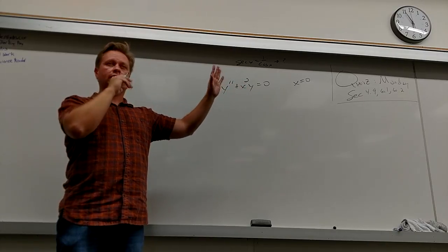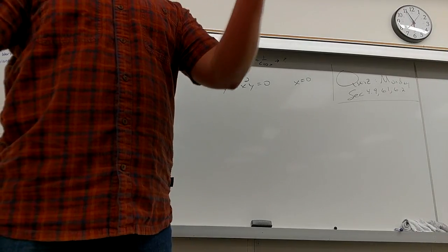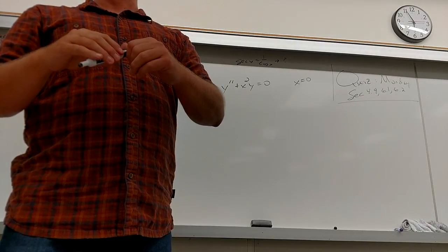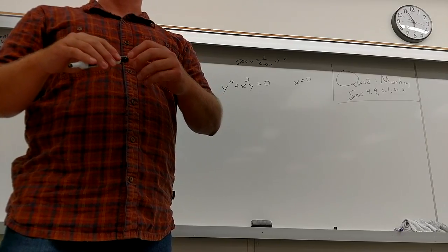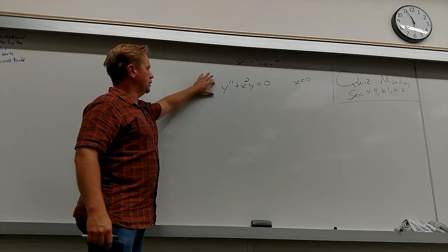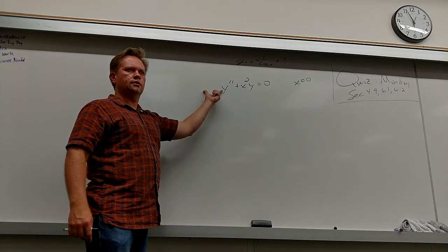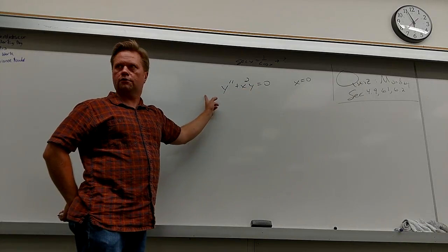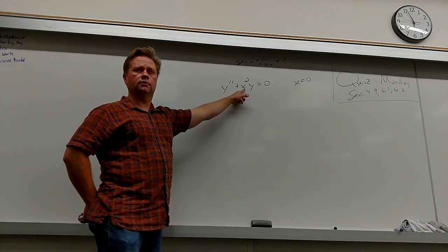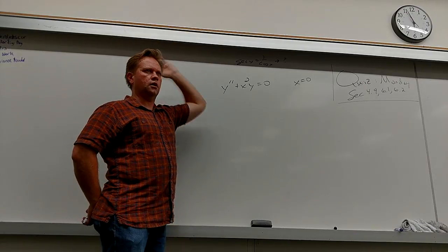So what do we assume the form of the answer to be? They say the solution is going to be around x equals zero. What's got to be true about that point? It's got to be an ordinary point. And what does ordinary point mean? It can always find two independent solutions.